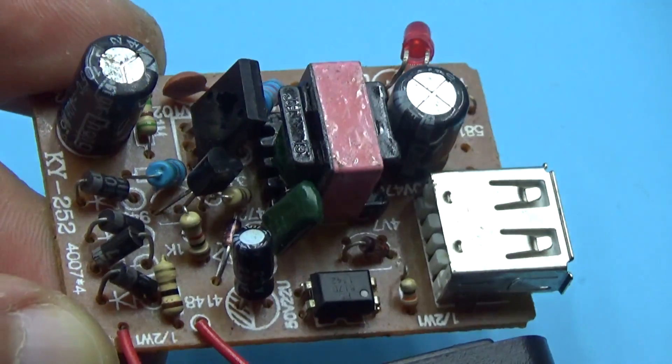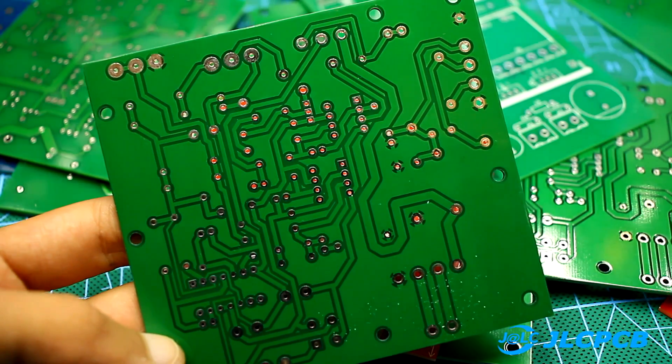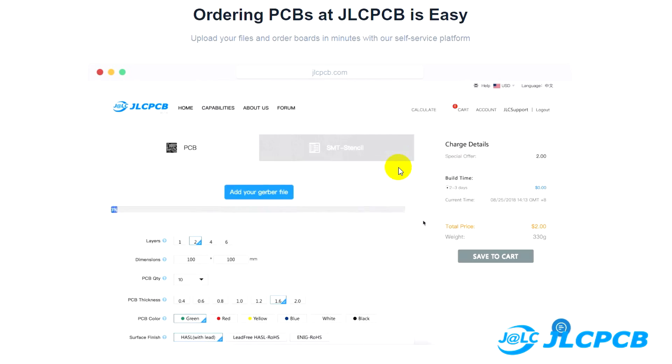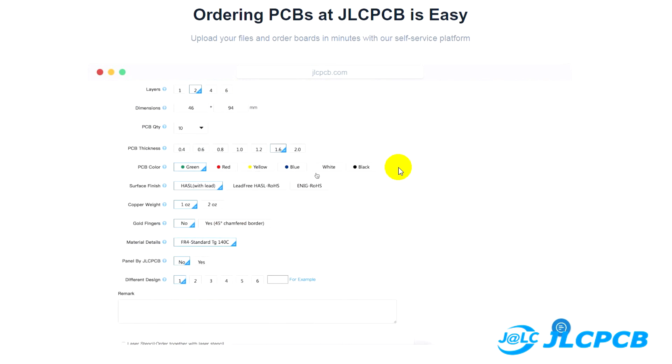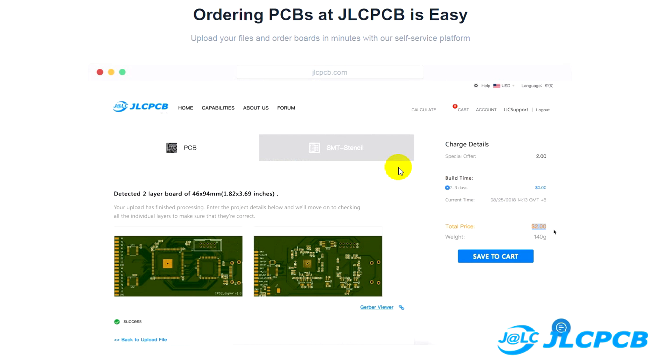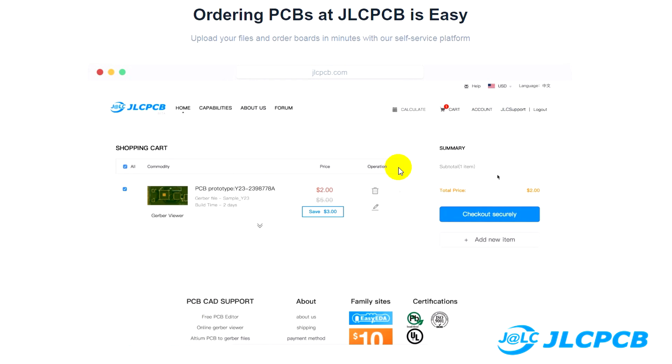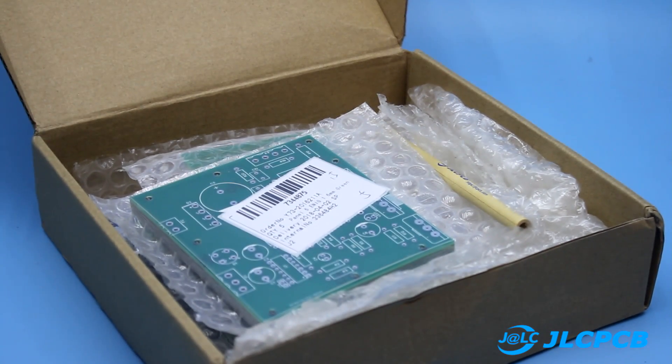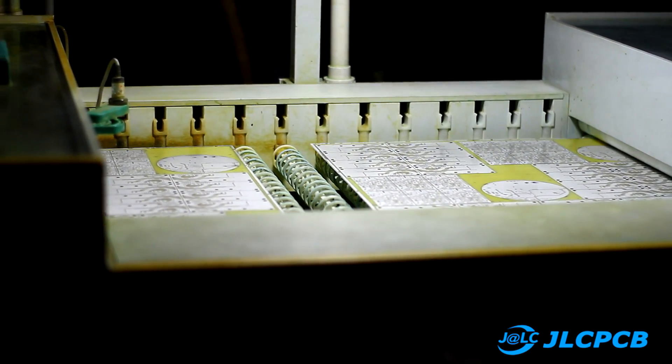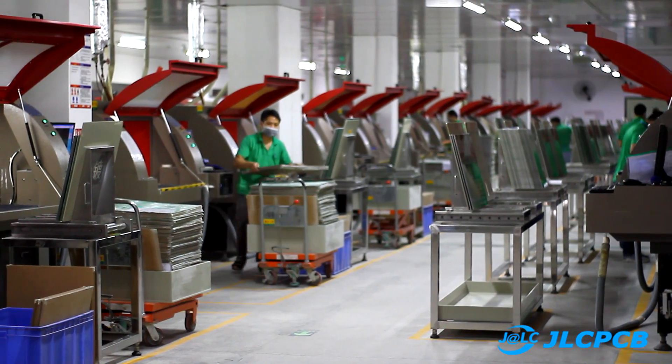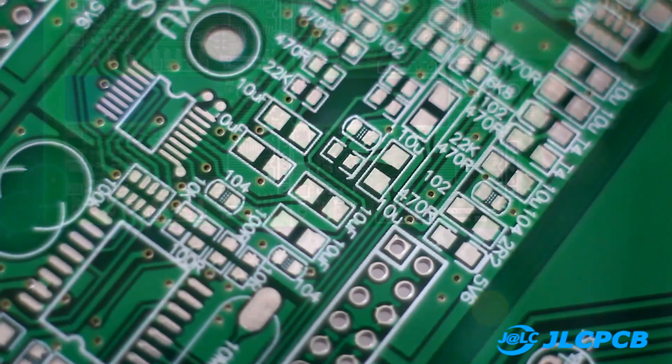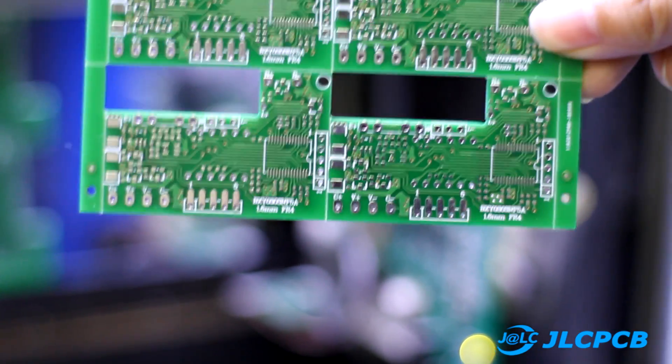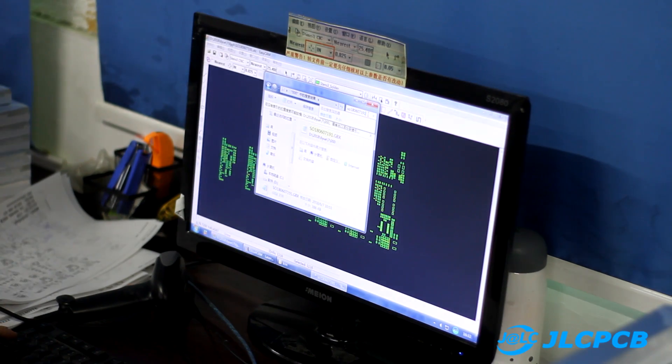But you can order high-quality printed circuit boards on the JLCPCB website. They provide the shortest time to manufacture the boards, only 24 hours from the date of the order, fast delivery, and low pricing ranging from $2 for 10 boards with dimensions of 10x10 cm for any color. The complexity, size, and number of layers of the board aren't important. The company can manufacture any boards. Most importantly, they are high-quality. A link to the JLCPCB website can be found in the description.